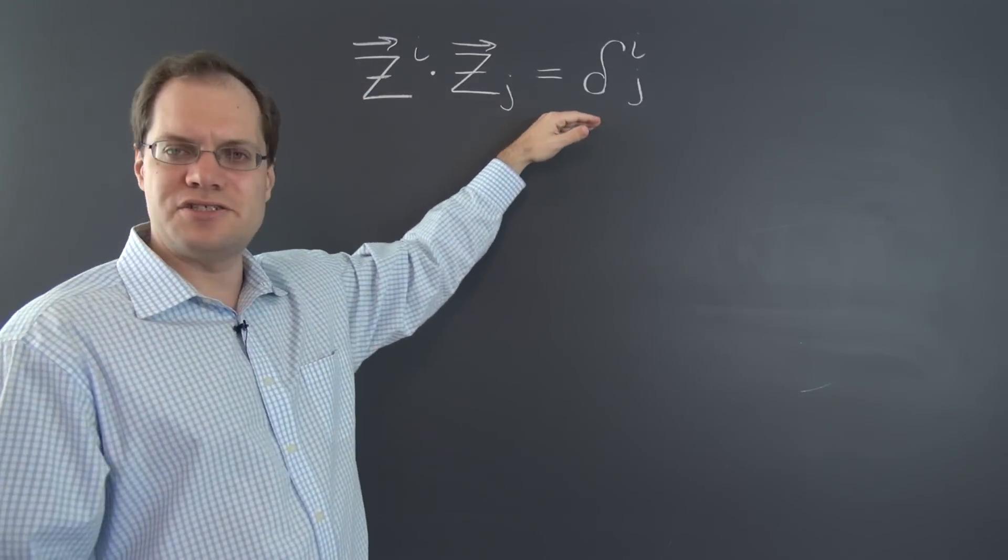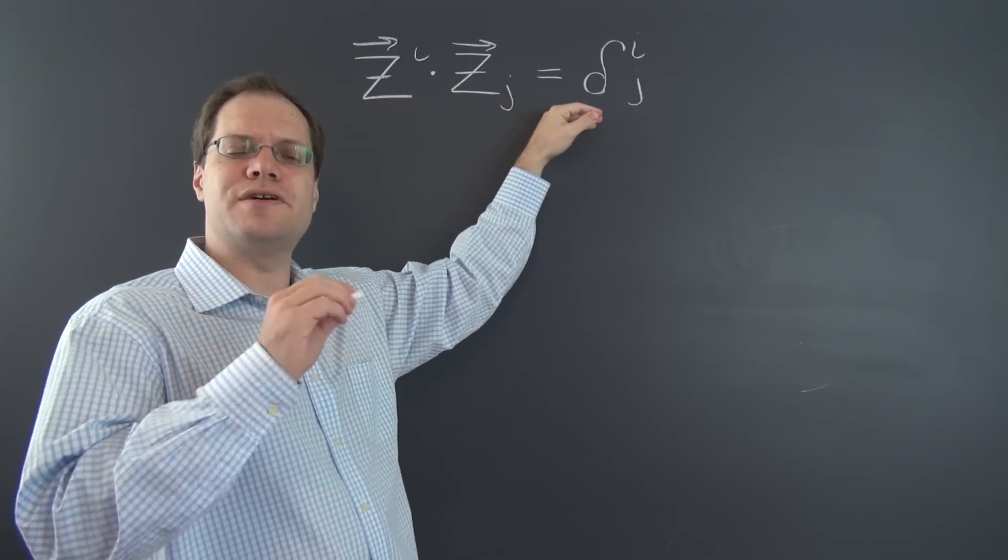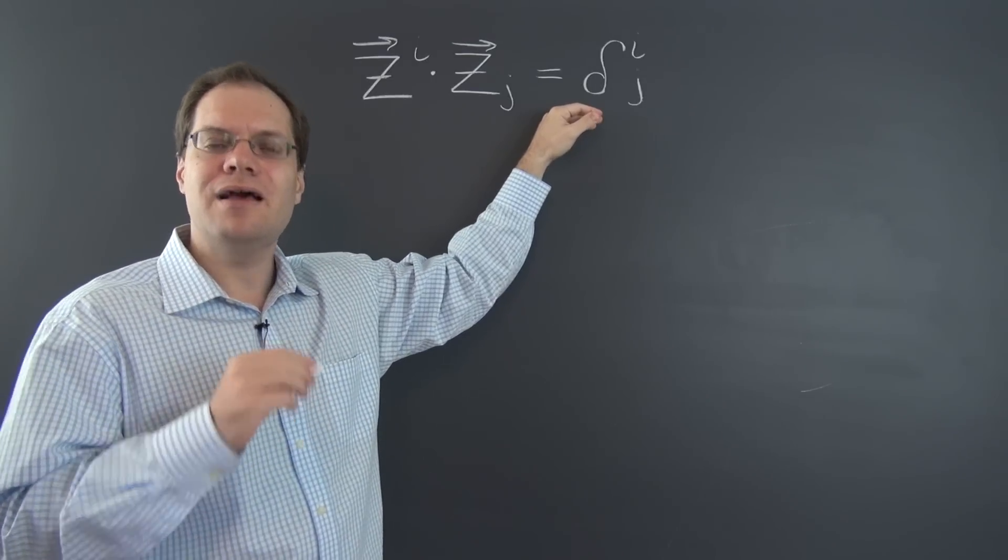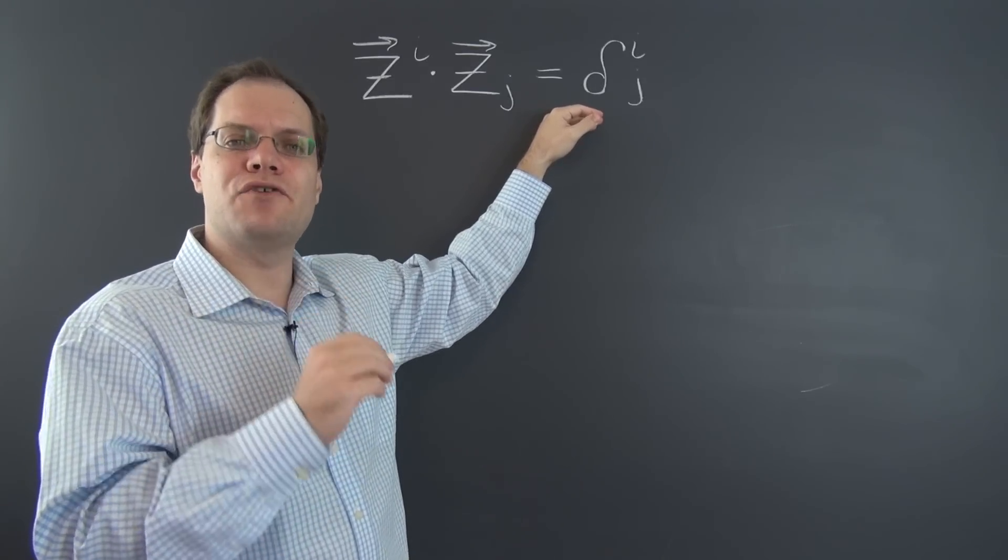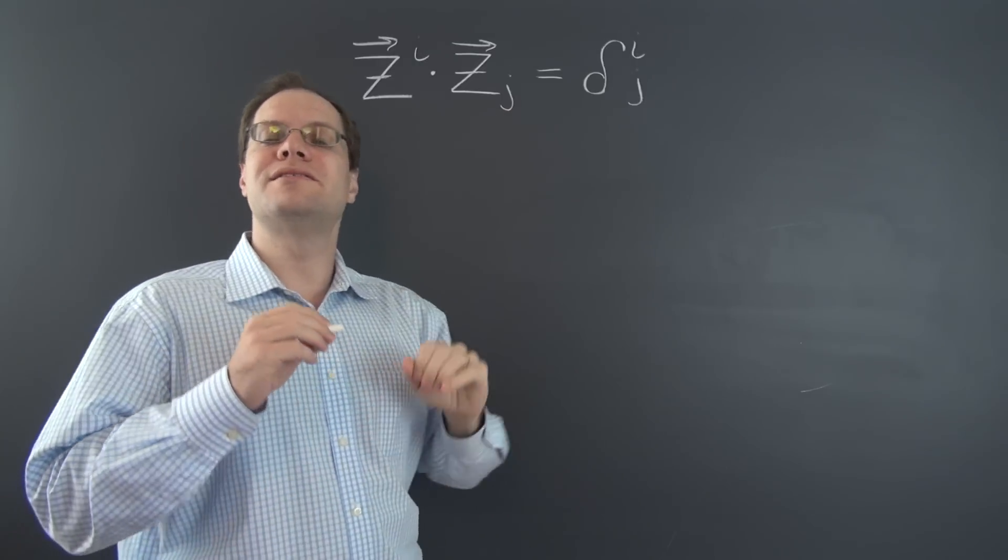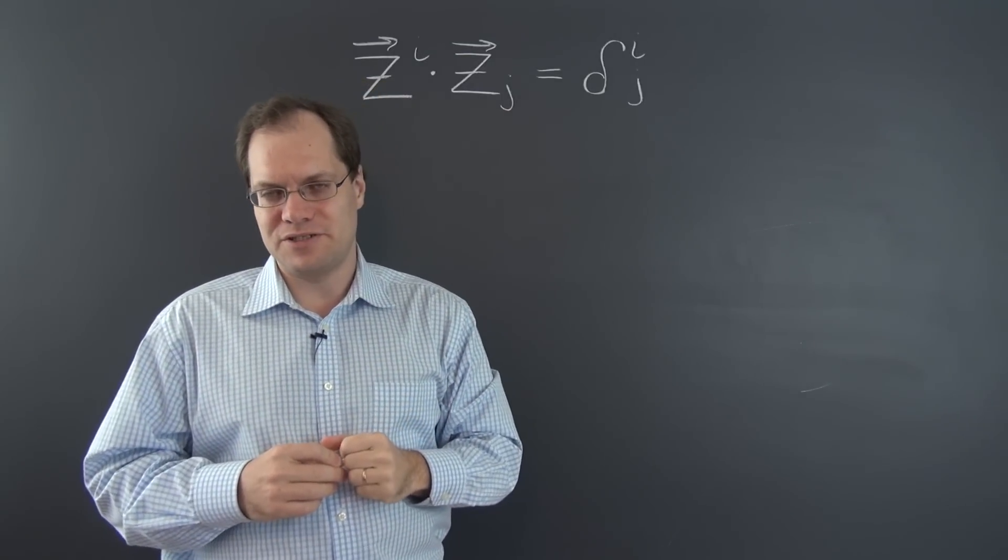So, of course, the key, once again, is the relationship between the covariant and contravariant metric tensors. And that relationship, that inverse matrix relationship, is the definition of the contravariant metric tensor.